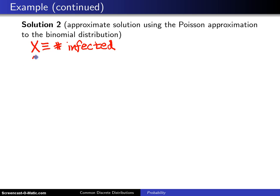And the next thing you do is you set lambda equal to np. When we first derived the Poisson approximation to the binomial distribution, we let mu equal to np. Now we let lambda equal np, and that will be 500,000 times 0.002 and that turns out to be 1,000.